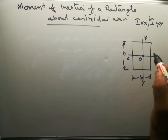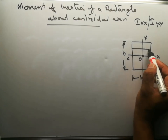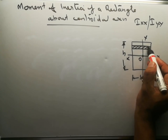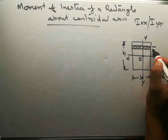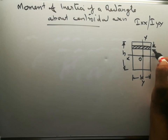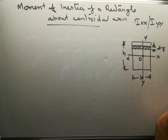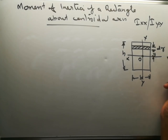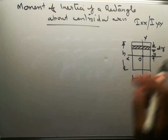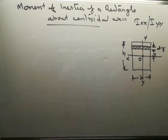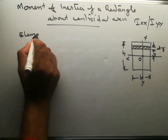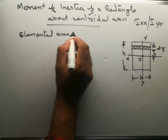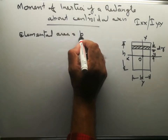For that, what we do is we will consider a small area — a small strip of thickness dy, which is at a distance y from the centroidal horizontal axis. This distance is dy. The area of that element is equal to B times dy.